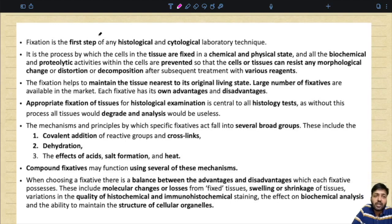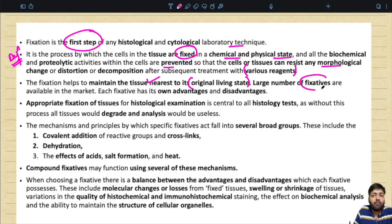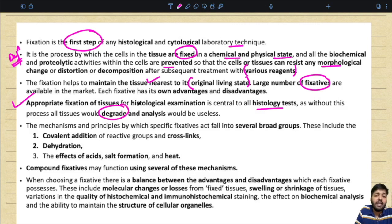Fixation is the first step of any histological and cytological laboratory technique. The definition of fixation: it is the process by which the cells in the tissue are fixed in a chemical and physical state, and all the biochemical and proteolytic activities within the cells are prevented so that the cells or tissues can resist any morphological change, distortion, or decomposition after subsequent treatment with various reagents. Fixation helps maintain the tissue nearest to its original living state.